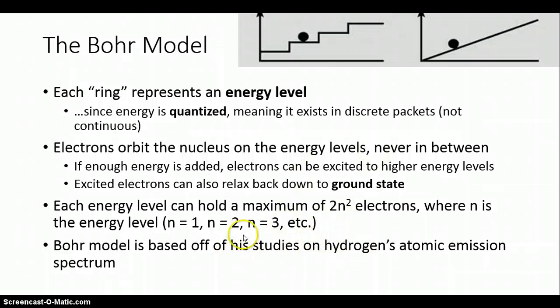As an example, if I was talking about an n equals 3 energy level, the maximum number of electrons they could hold would be 18, because 3 squared is 9 times 2 is 18. Remember the order of operations.